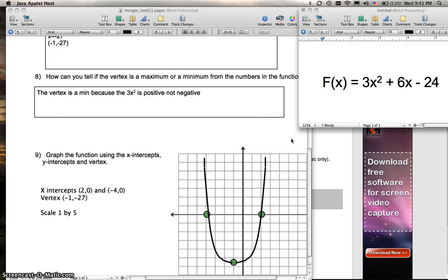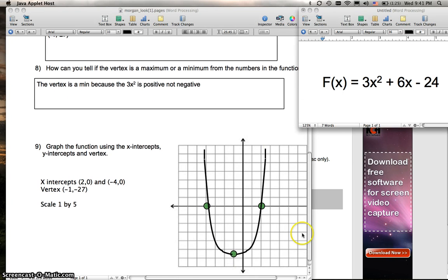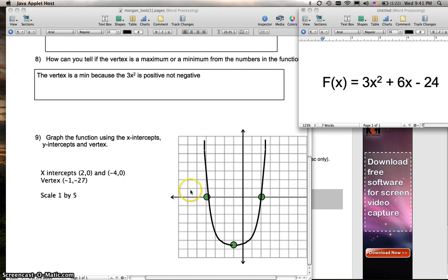Alright, then the final question—here's my lovely graph—is to graph the function right here. So since we have both the x-intercepts and the vertex, we can just plot those on my poorly drawn graph, like so. So here's both x-intercepts and the vertex, and then graph it. And considering that (-1, -27) is kind of hard to get on a graph this small, the scale is every block is 1x and 5y. So 5, 10, 15, 20, 25, 27.